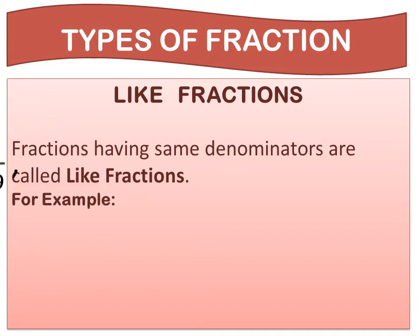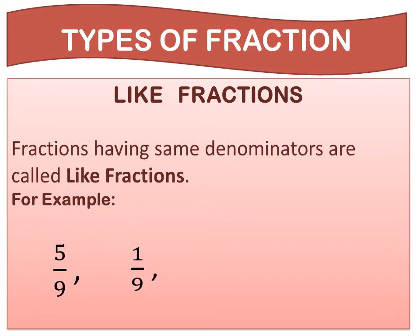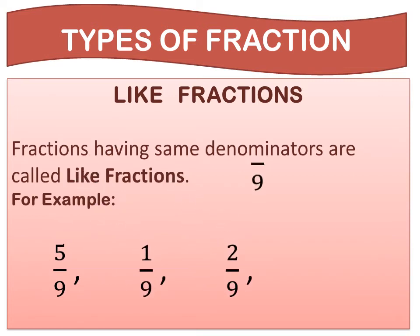For example of like fractions: 5 upon 9, 1 upon 9, 2 upon 9, and 7 upon 9. In each case, the denominators are the same — that is, equal to 9.